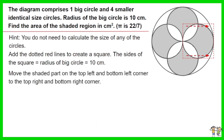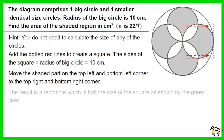Move the shaded part on the top left and bottom left corner to the top right and bottom right corner as shown on the diagram. The result is a rectangle which is half the size of the square, as shown by the green lines.